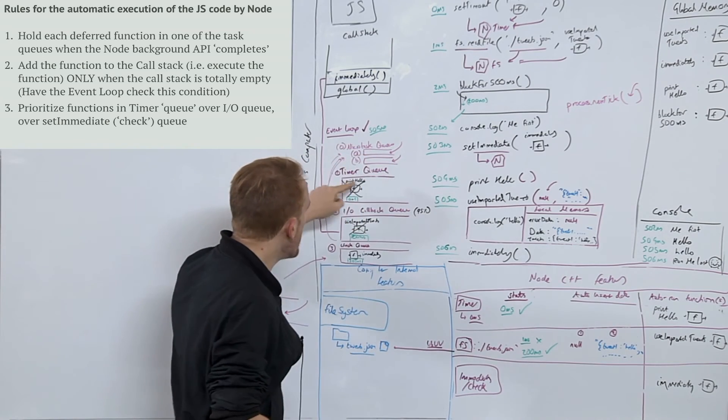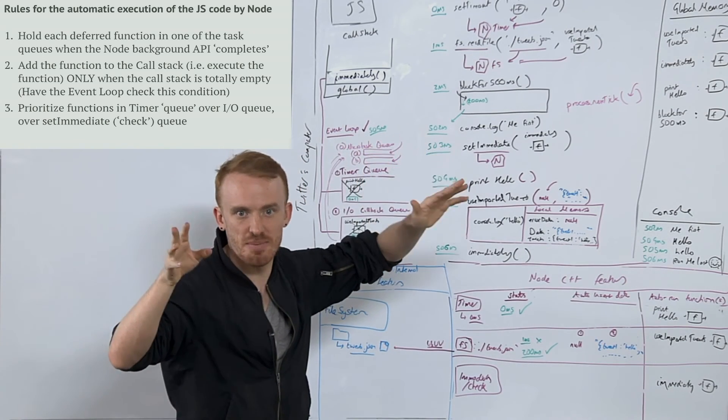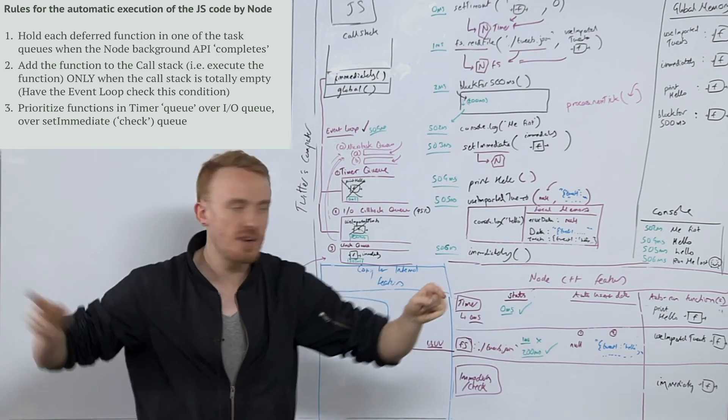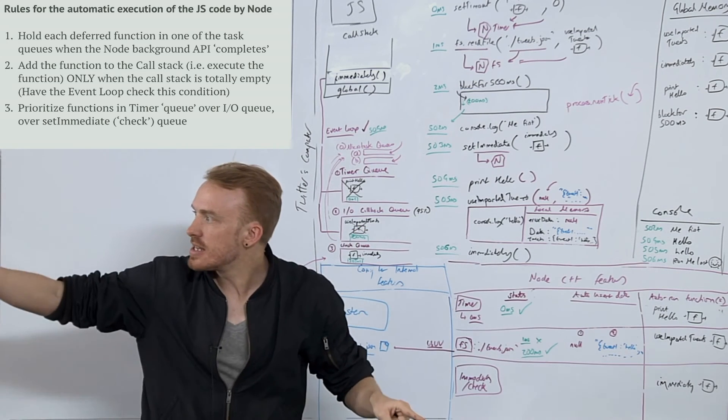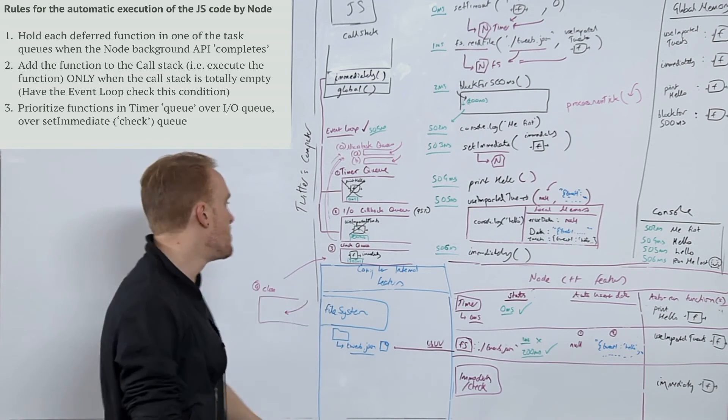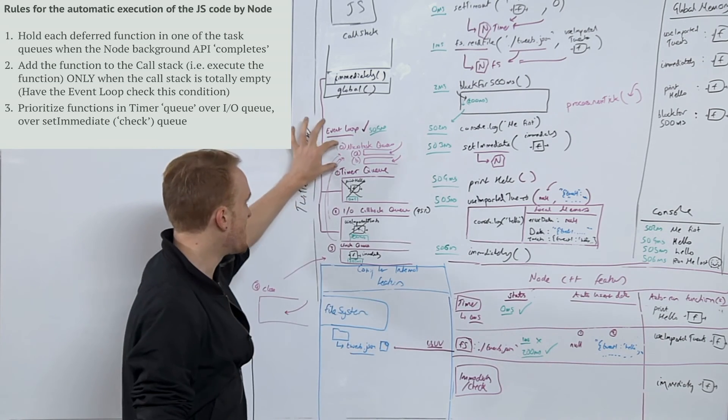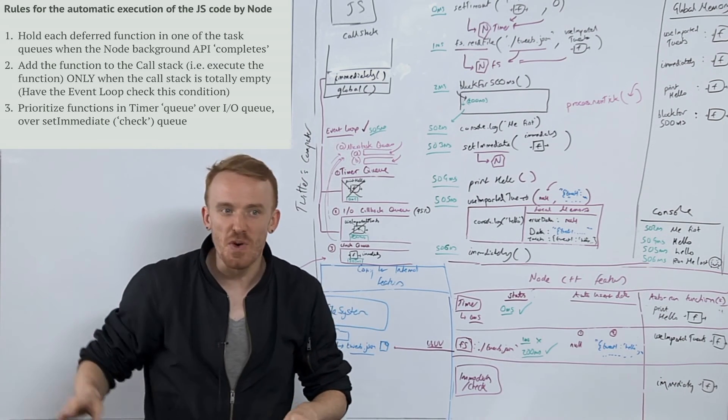Only when the call stack is totally empty have the event loop be checking for this condition to be true. Prioritize functions in the timer queue, technically a min heap but basically a queue, over the IO queue, over the check queue, over the close queue. And because I wasn't sure I was going to tell you about these two, four.